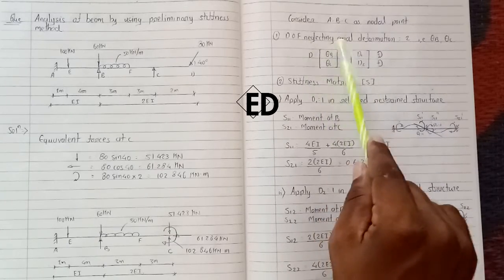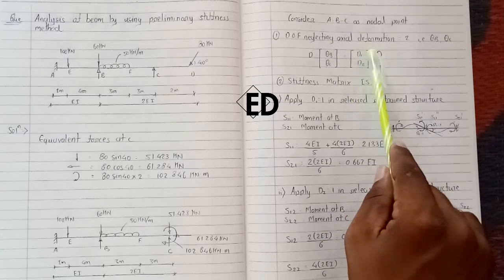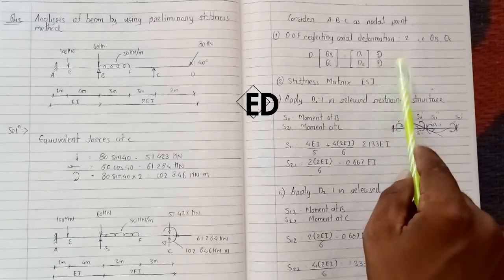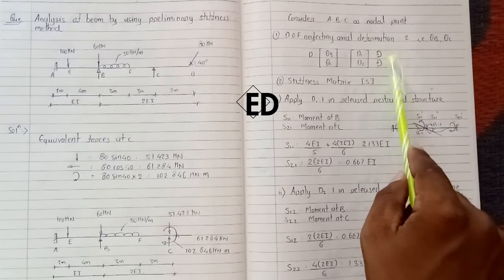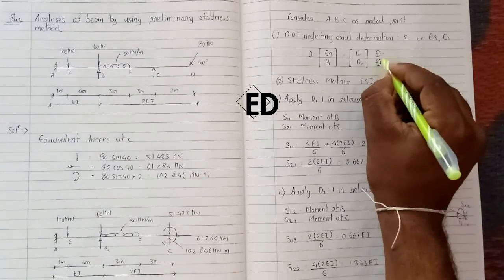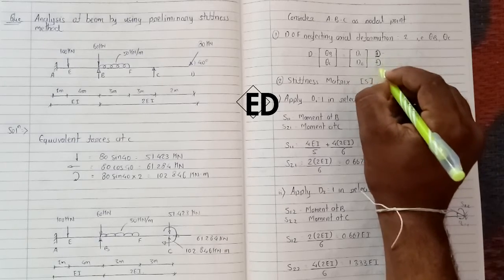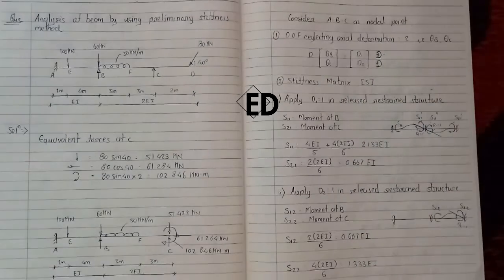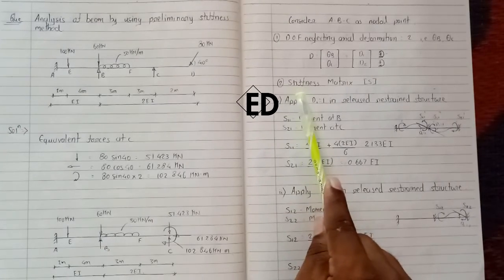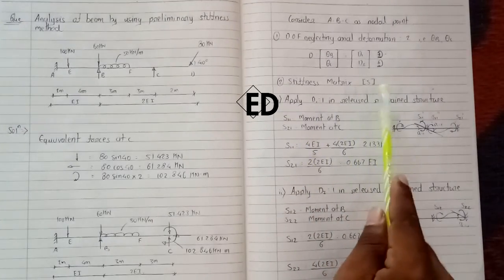The D matrix is: D = [θ_B, θ_C], where we represent θ_B as D1 and θ_C as D2. Our sign convention is that clockwise moment is positive at both joints. Now moving to our second step: the stiffness matrix, where we calculate the stiffness of each joint by considering unit rotation at each degree of freedom.